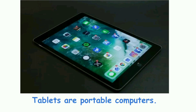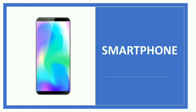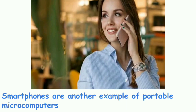Tablet computer — these are another example of portable computers. A tablet is smaller than the laptop computer and bigger than the smartphone. Like a smartphone, this tablet PC also has a touch screen. It has a wider screen, so it is convenient to use for reading magazines and typing documents. It is controlled via the touch panel like a smartphone, and it also has a special pen to control the touchscreen.